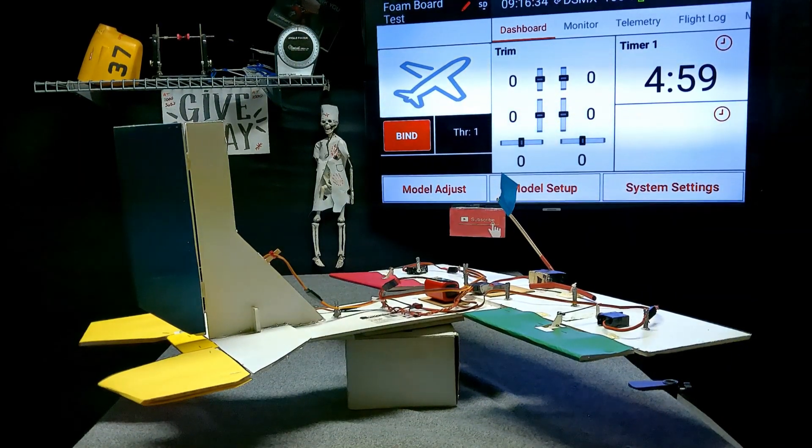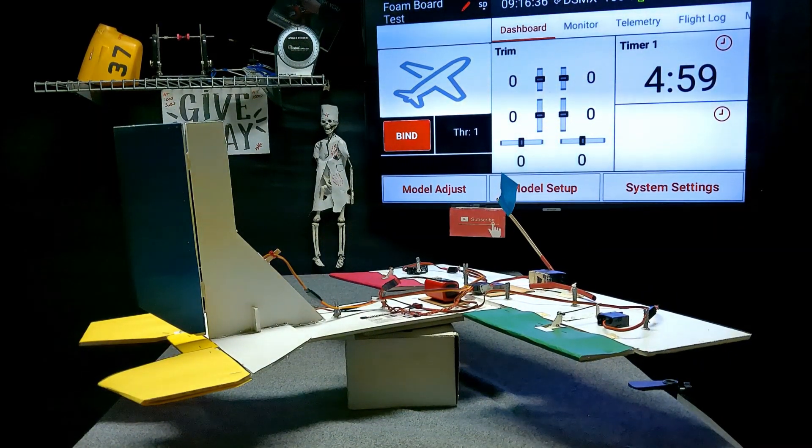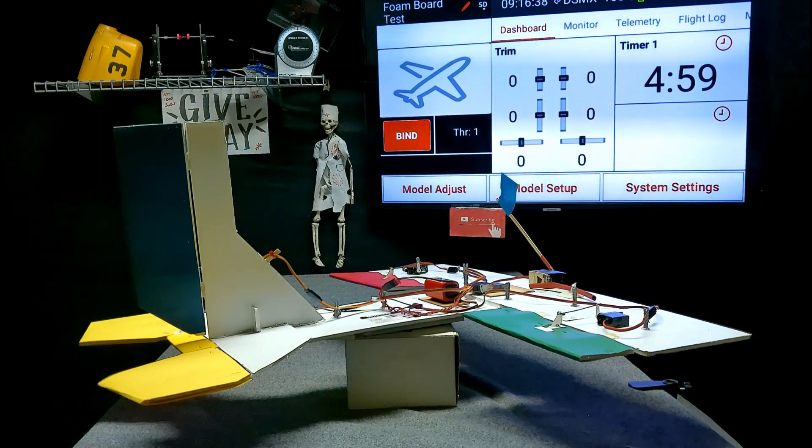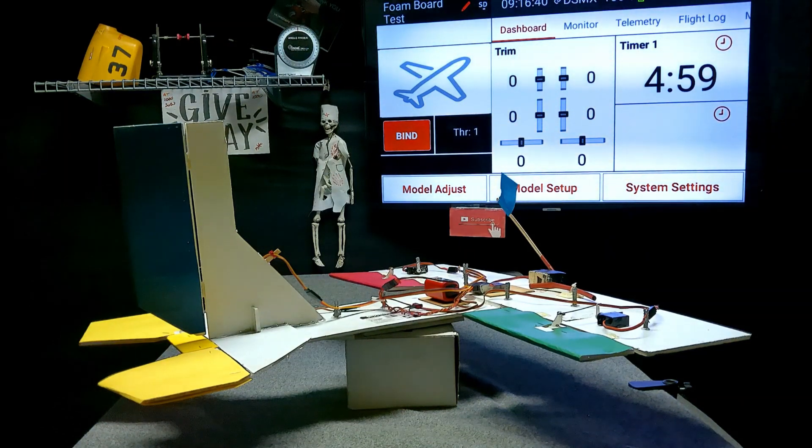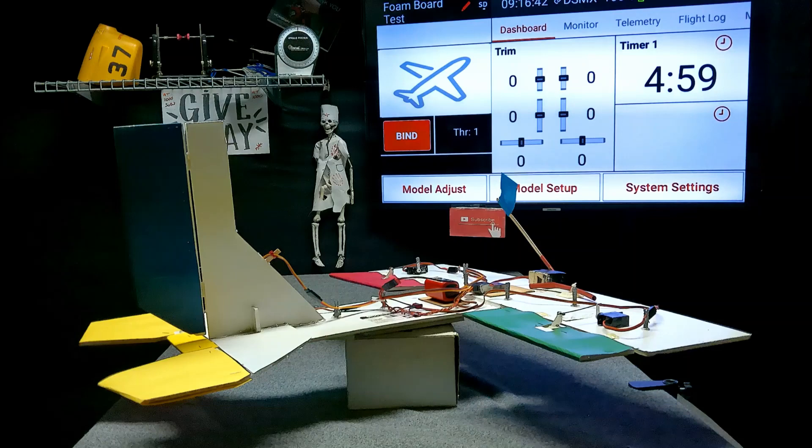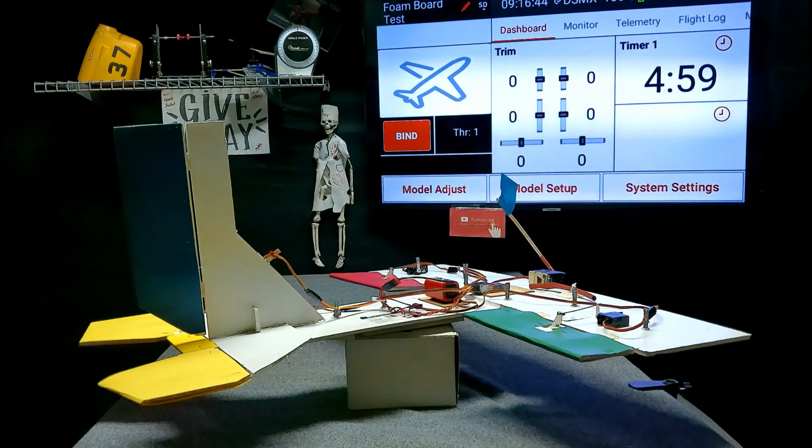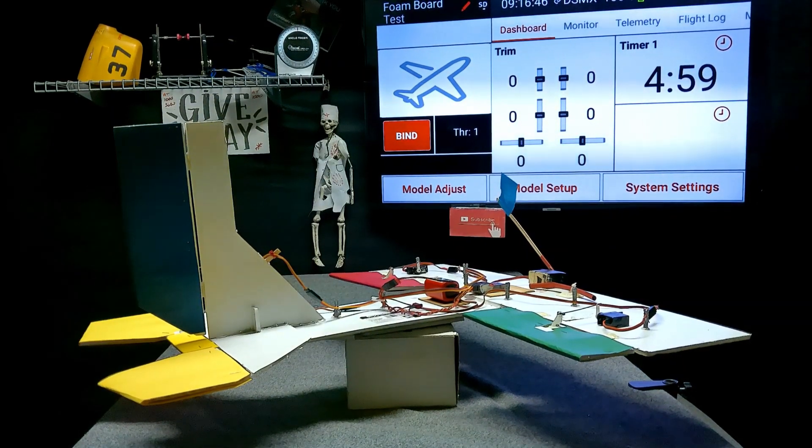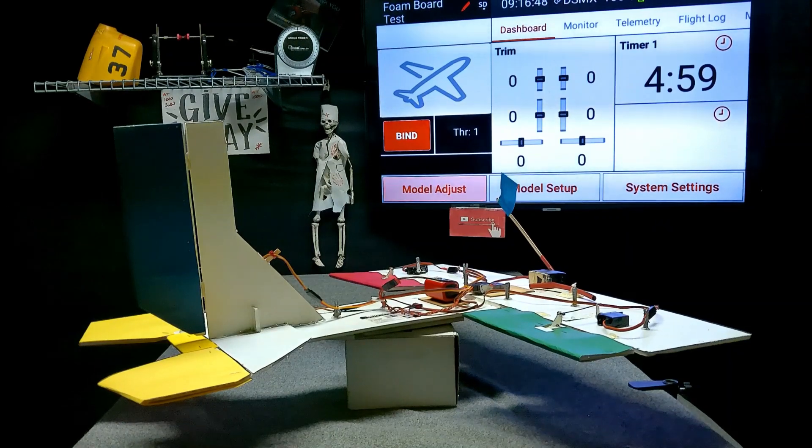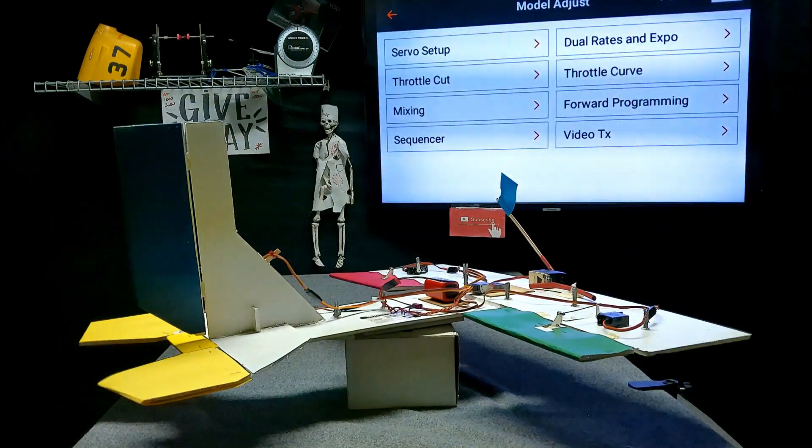Each of the control surfaces is a different color so we can point at things. Look at the yellow elevator. We got red and green ailerons—I'm working on that. So let's go to forward programming. That's where we can see the gains.